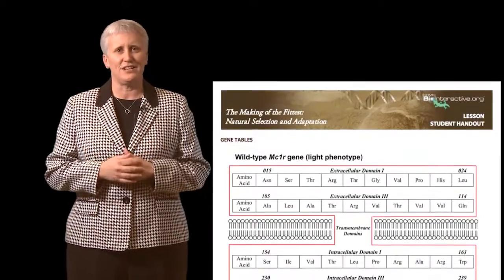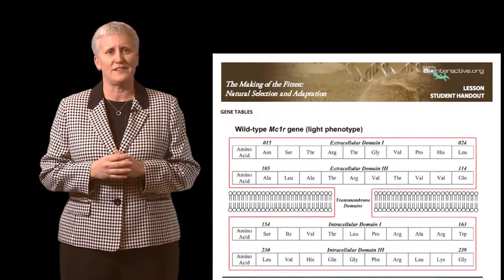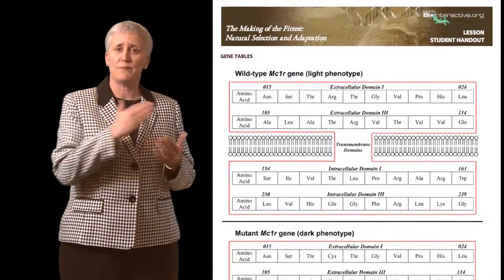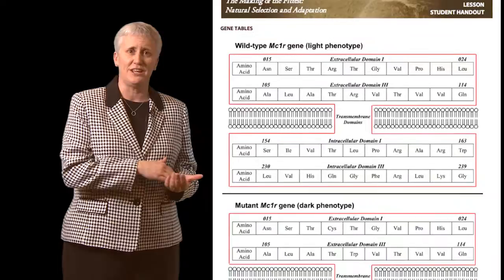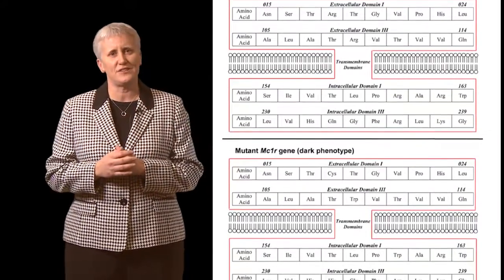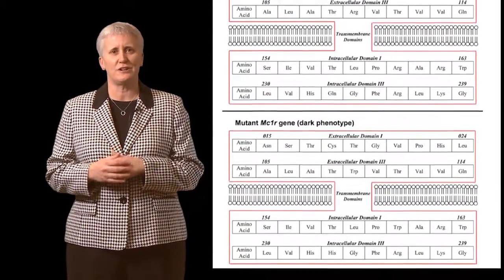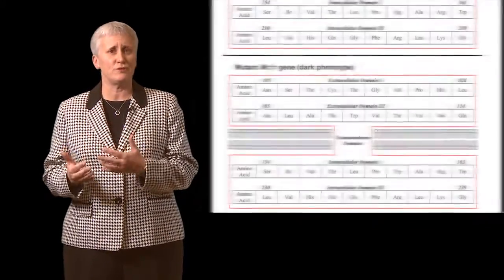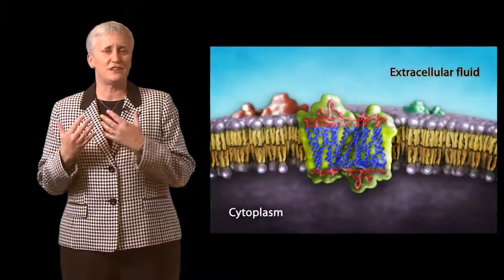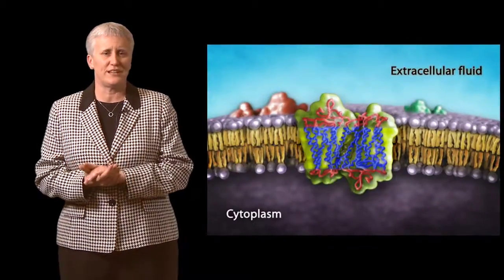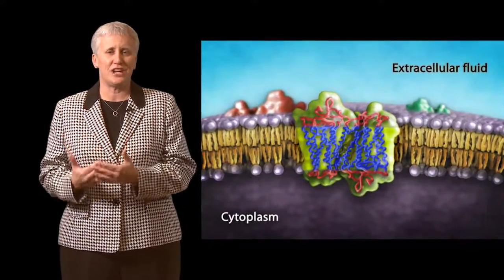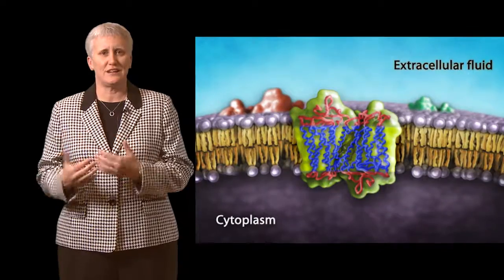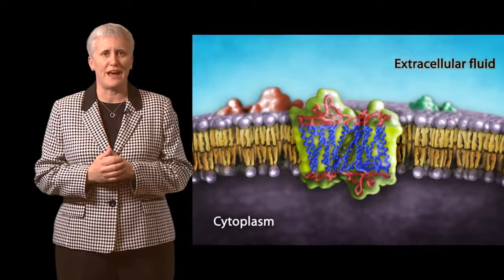In the second activity, students analyze the amino acid sequences from the first activity and hypothesize how changes in the structure of the MC1R protein, which is a G protein-linked receptor, can lead to changes in its function in a cell communication pathway.